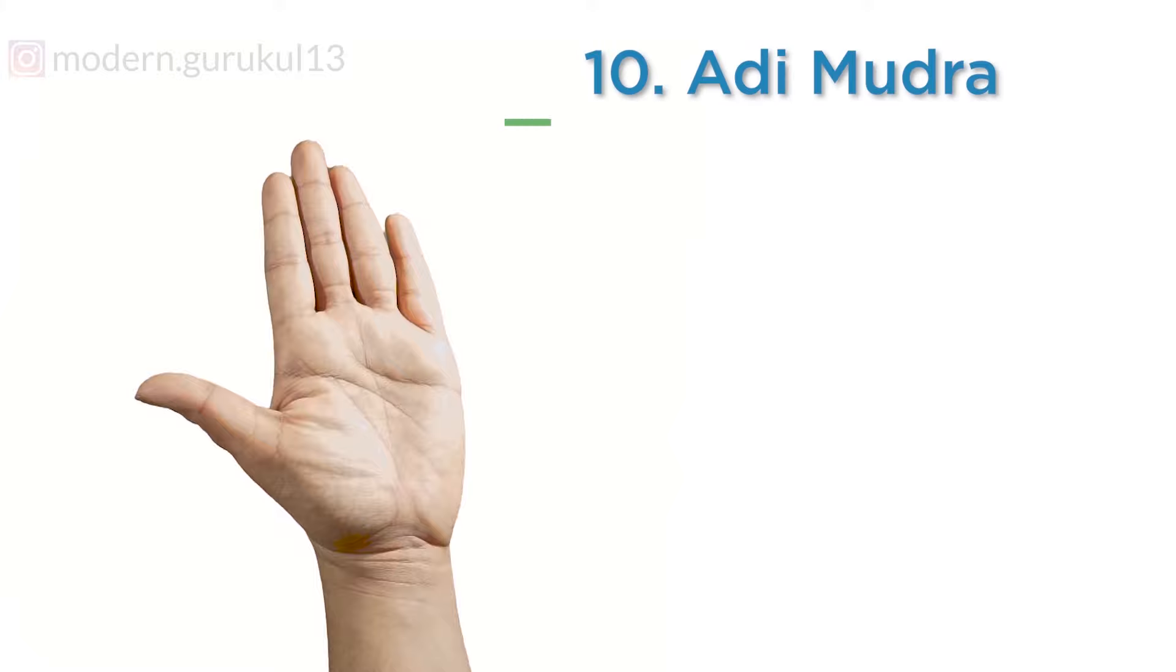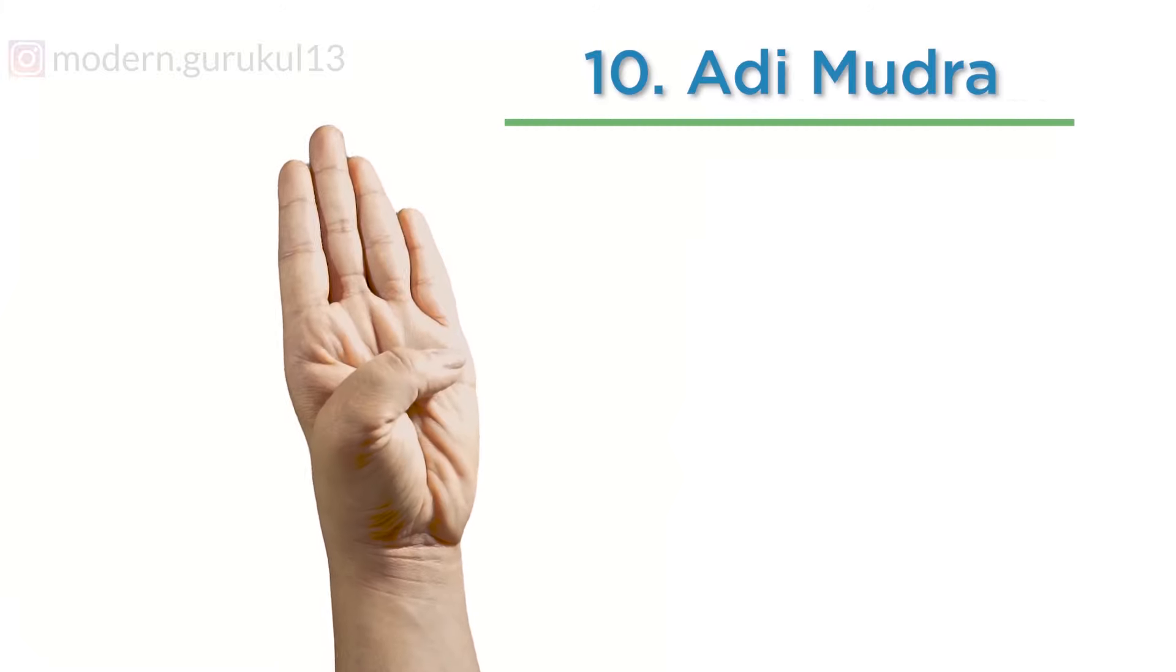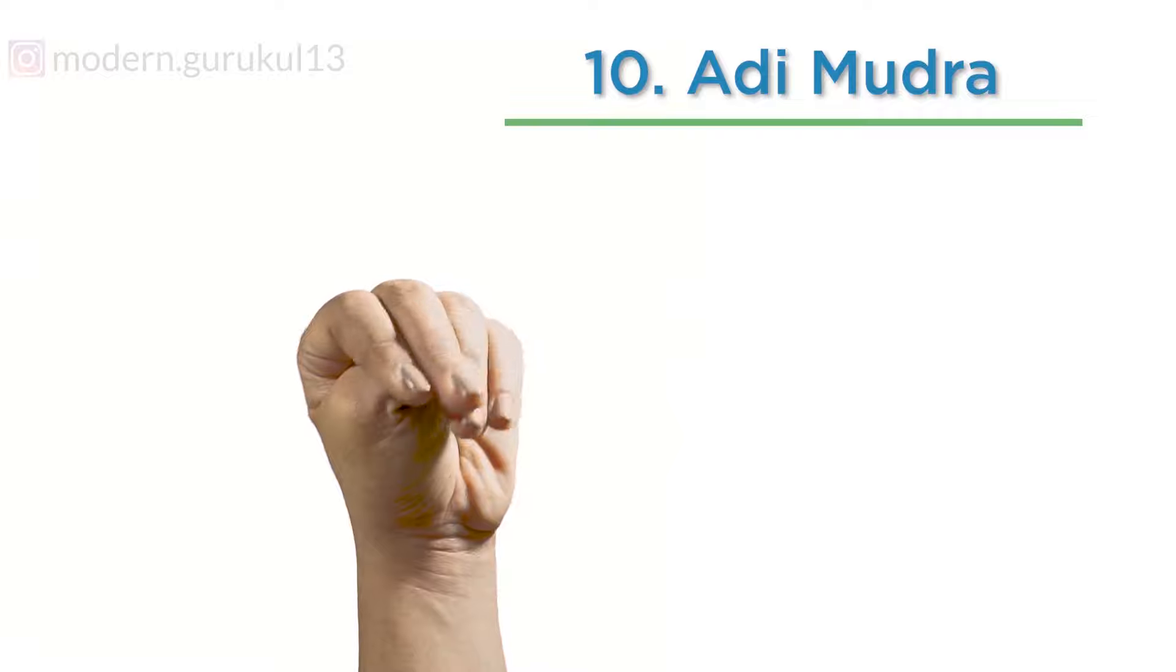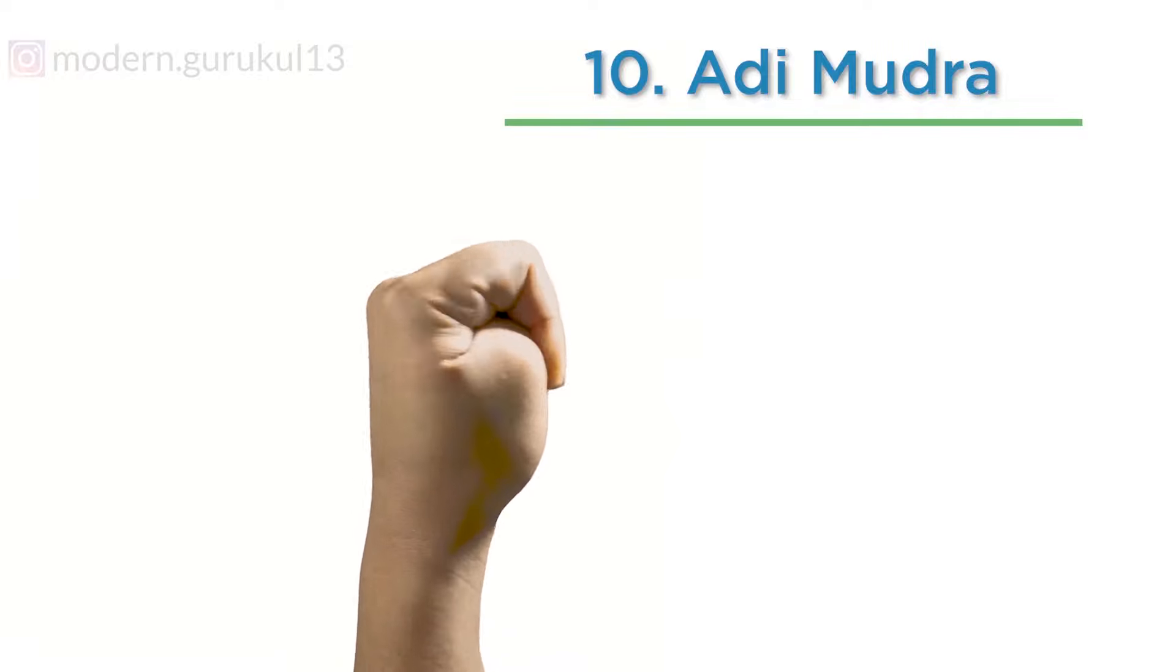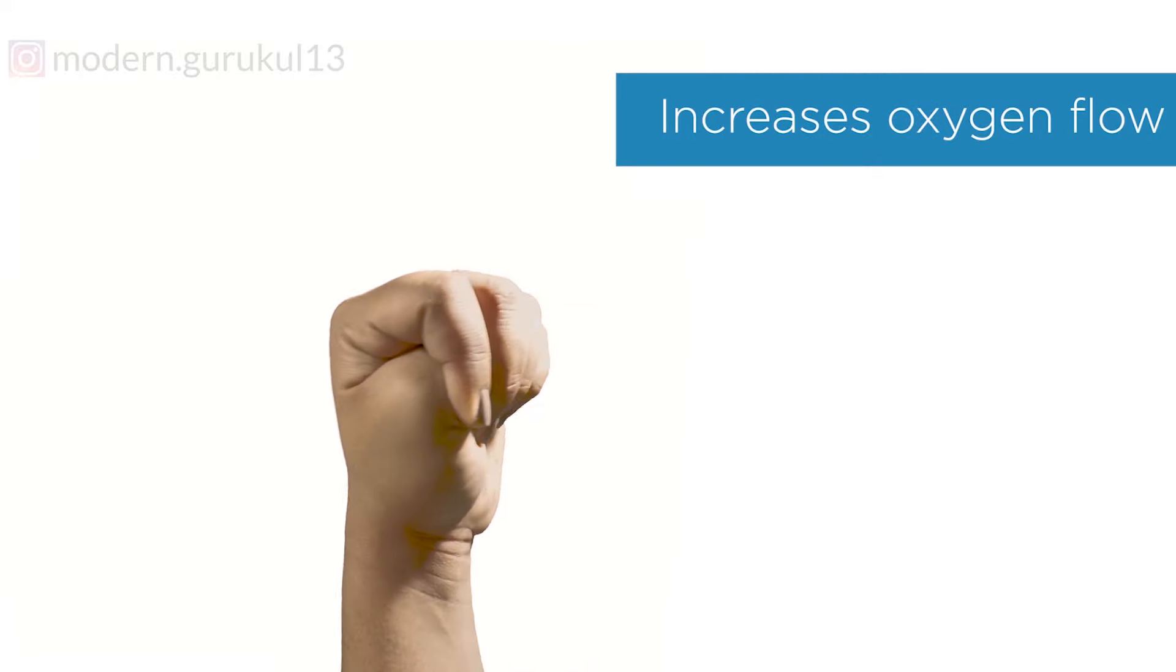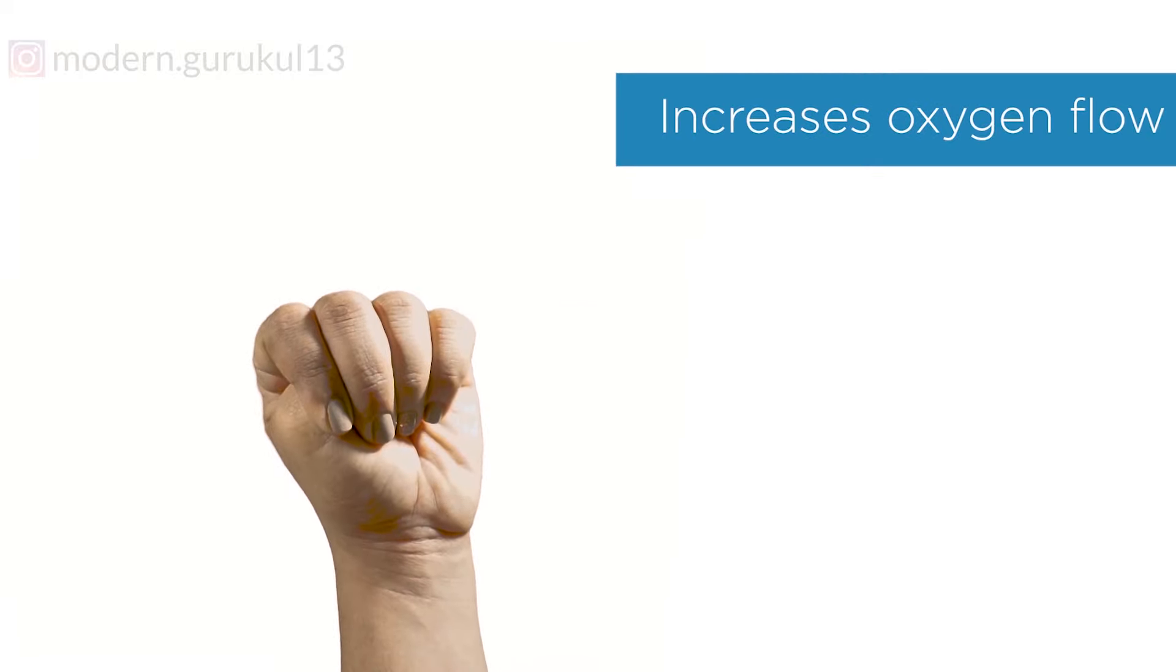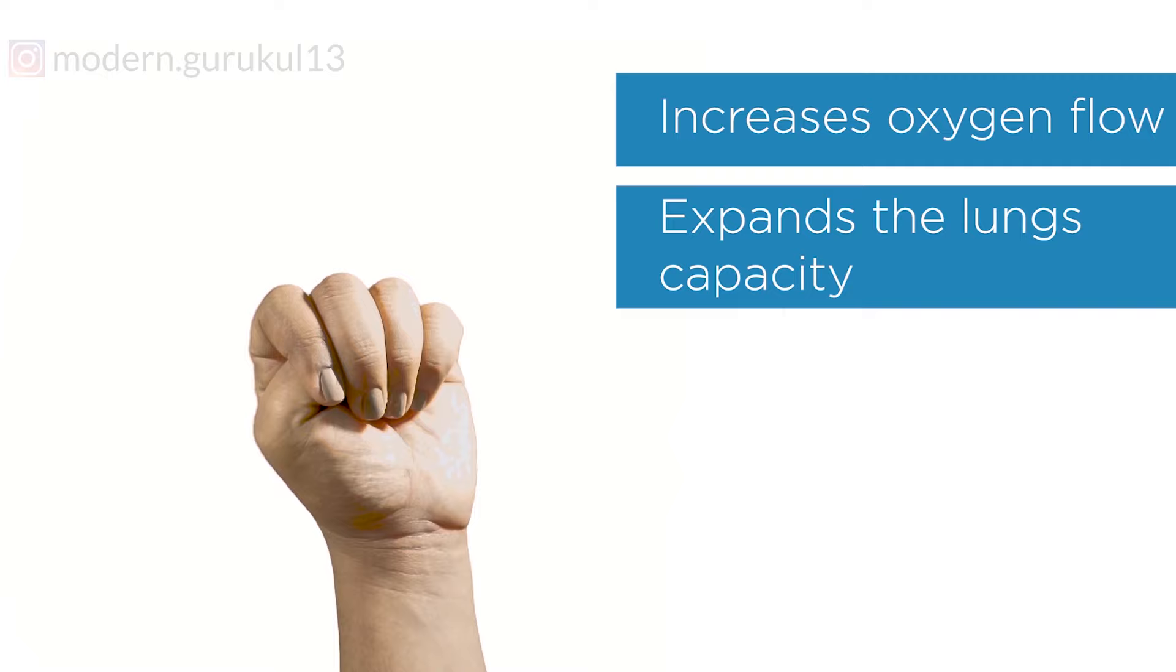Varun Mudra: The tip of the thumb touches the base of the little finger and all other fingers are closed over the thumb. It increases oxygen flow in the body and also expands the lung capacity.